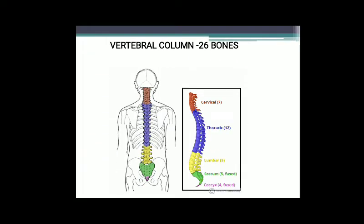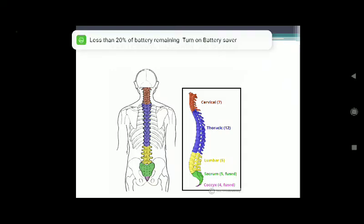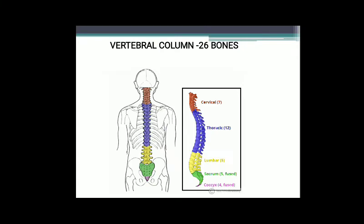The human vertebral column consists of 26 bones divided into 5 categories: cervical (7 bones, vertebrae of neck region; first two are atlas and axis with no intervertebral disc between them), thoracic (12 movable vertebrae supporting the thoracic region), lumbar (5 movable vertebrae supporting the abdominal region), sacral (5 fused to form one composite structure called sacrum, supporting the pelvic region), and caudal (4 fused to form the coccyx).